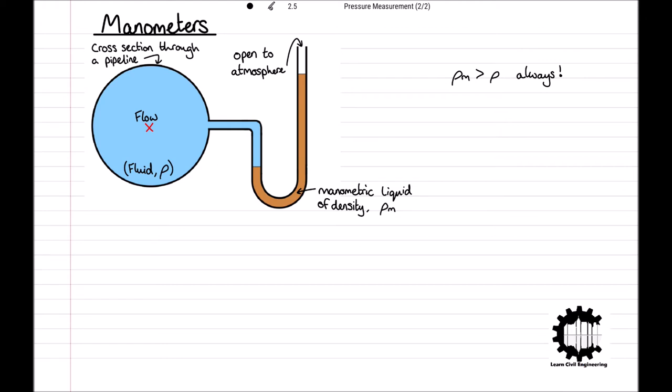And in the case of a liquid flowing through the pipeline, for the manometric liquid to lie below the pipeline fluid, like we can see here, rho m must be greater than rho. In the case of an inverted manometer, where the manometric liquid lies above the pipeline fluid, the opposite is true, and so rho m must be less than rho.